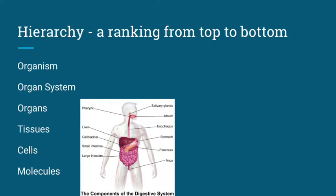At the biggest level, we have an organism. You are an organism. A single tree is an organism. Your dog or cat is a single organism. An organism is made up of an interconnected system of organ systems, such as the digestive system or the circulatory system. Each of those systems is made up of a bunch of organs, such as your heart, your lung, your stomach, or your liver. Each of those organs work together to make up an organ system.